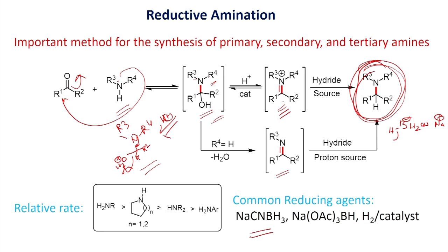Now let us look at the reactivity of amines. Primary amine is more reactive compared to secondary amine, which is more reactive than cyclic amine; cyclic amine is more reactive than acyclic amine, which is more reactive than aryl amines. So aliphatic amines are more reactive compared to aryl amines — this is the reactivity order of amines.